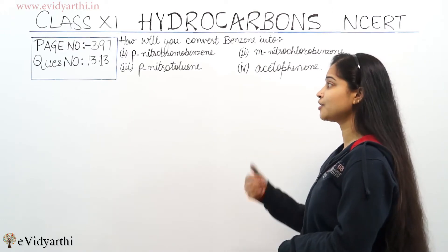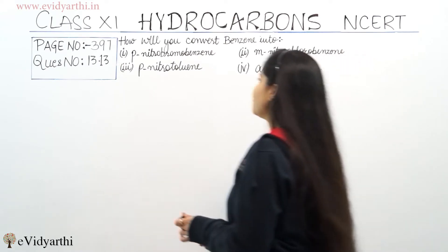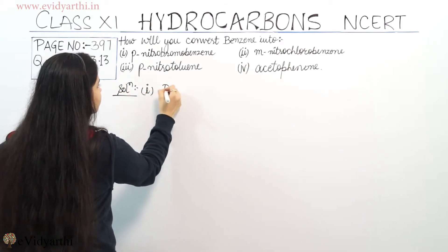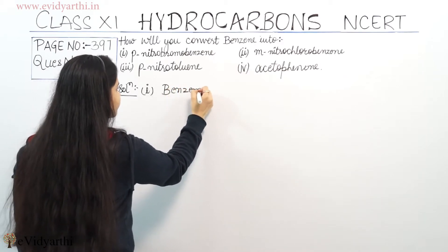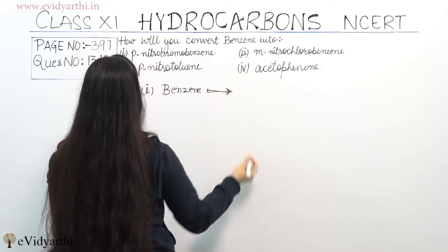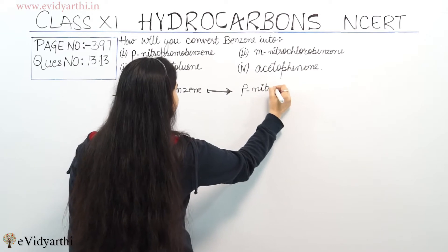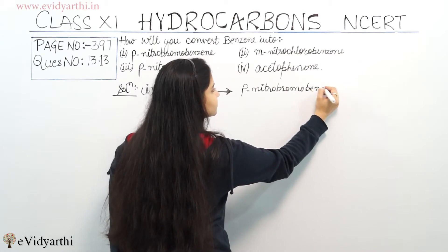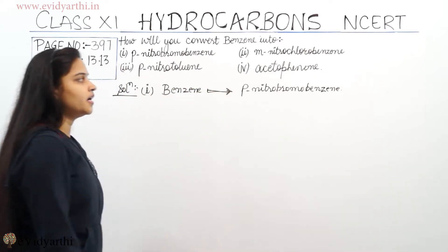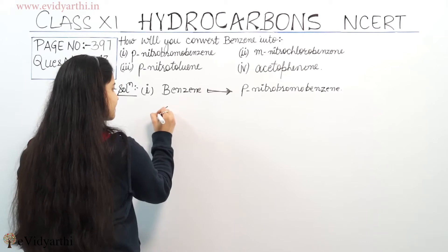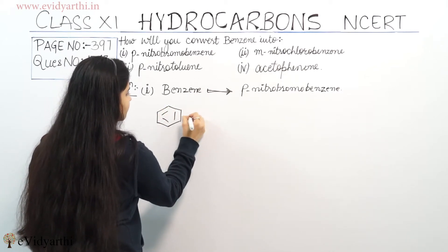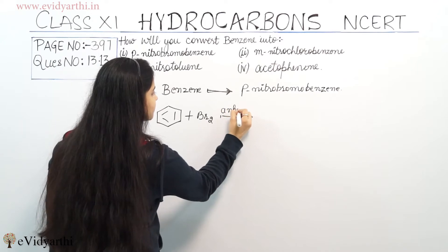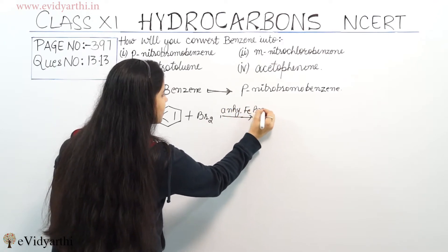Let's begin with the solution. I will be solving the first part first. The first part is to convert benzene into para-nitro-bromo-benzene. So let's start — we take benzene and add bromine (Br₂) in the presence of anhydrous FeBr₃.